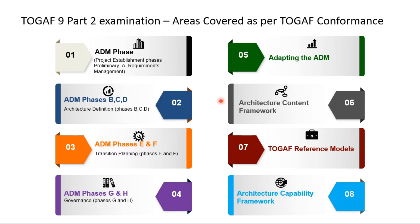In this TOGAF Level 2 exam, whatever you have learned in Level 1 — for example, the ADM phases, the four sections — you need to apply those. You will be applying them by adapting the ADM and by implementing the Architecture Content Framework, which will be a reference to your ADM.